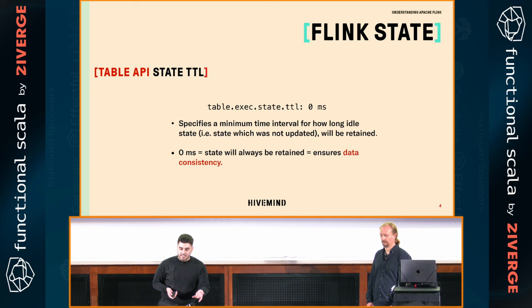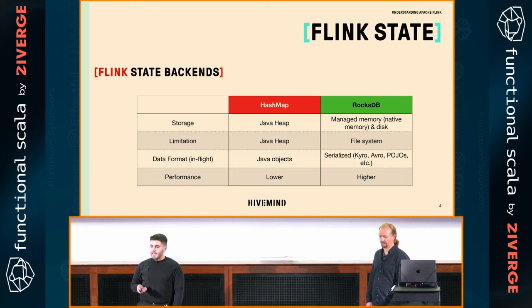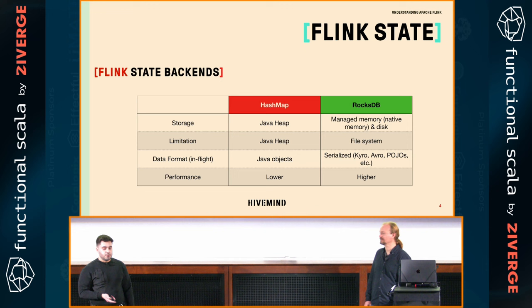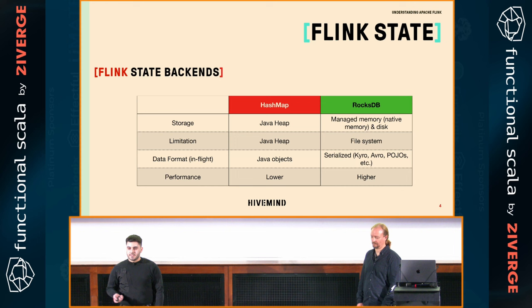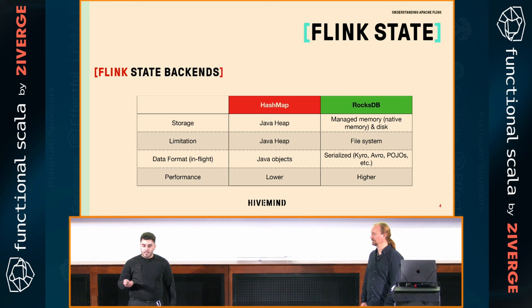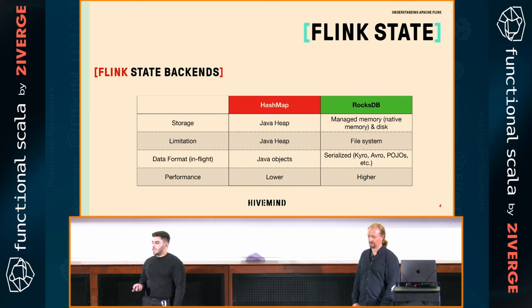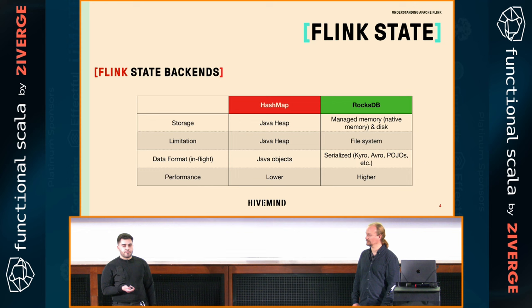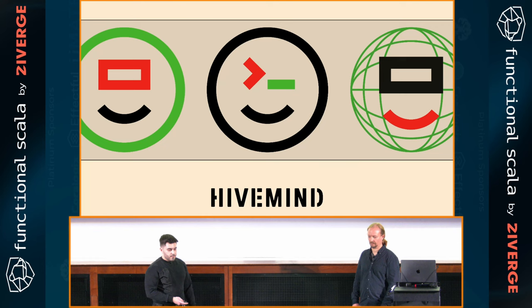In our case, we had to leave state expiry at zero because we needed data consistency. Flink allows you to plug and play different state backends, which was very important for us since we were materializing over 700 SQL Server views, some with 20 to 10 joins. HashMap state backend wasn't sufficient — although it's very performant, it uses the Java heap and everything is stored as Java objects, so it's limited by RAM and can overflow quite easily. Flink allows you to switch to RocksDB, which is a bit slower due to serialization and deserialization, but the upside is that you can use the file system — if RAM gets filled up, data can be spilled to disk.